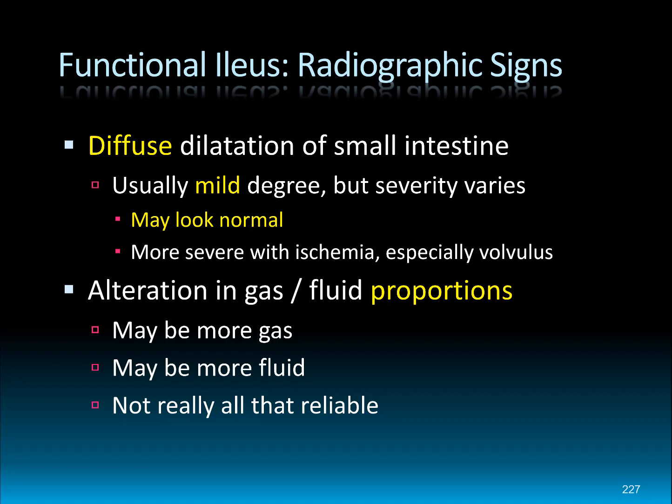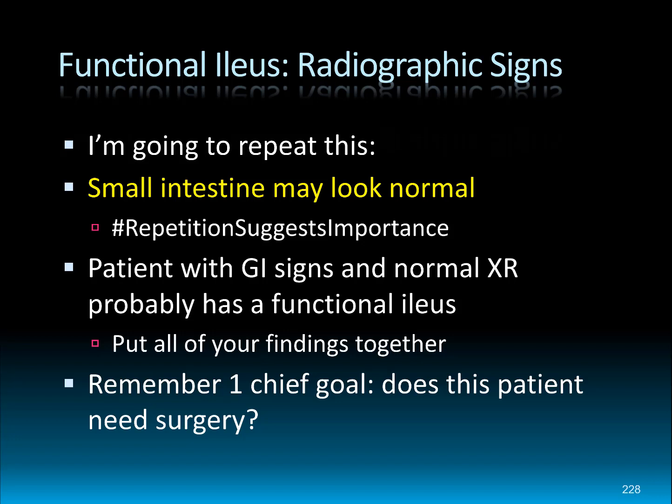Ischemia will have a much more severe appearance, and I'll get back to that later. Another thing we'll see in a functional ileus is an alteration in the gas and fluid proportion. A dog should be about 50-50 gas to fluid; a cat is going to be a lot more fluid. In a functional ileus you may see more gas or more fluid than is typical, although that's not a very specific or reliable finding. The small intestine can look normal or mildly and diffusely dilated — we're on the mild end of the spectrum.